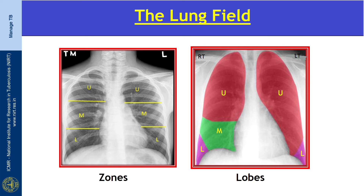Coming to the lung fields — radiologically, the lung fields are divided into zones: upper zone, mid zone, and lower zone. The upper zone starts from the apex to the lower end of the second anterior rib. The mid zone starts from the lower end of the second rib to the fourth rib. The lower zone starts from the fourth rib to the diaphragm. The zones do not equate to lung lobes — on the left side there are three lung zones but only two lobes. Whenever you describe an opacity, describe it in relation to the lung zones, not the lobe.